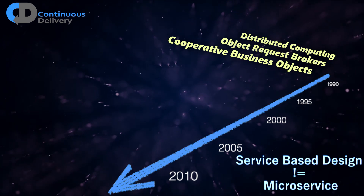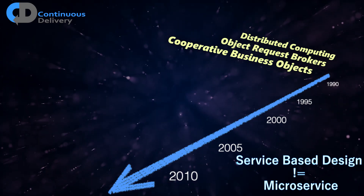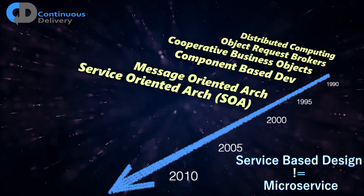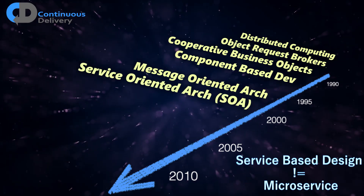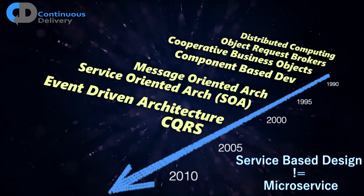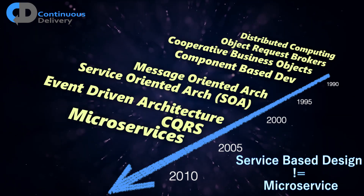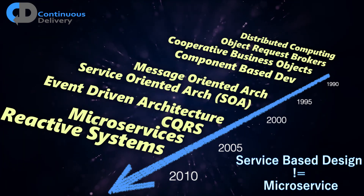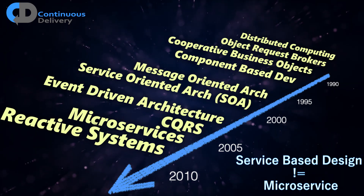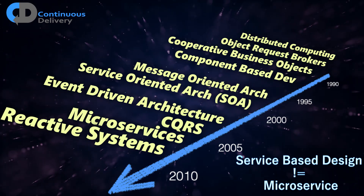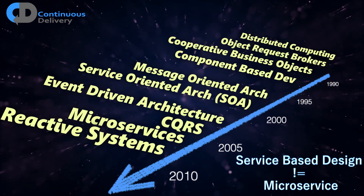These were little bundles of domain logic that communicated through what we called a semantic data service — a bit like XML but predating XML. I then moved on to bigger commercial systems, working on component-based systems and message-oriented architectures. Service-oriented architecture came in at the beginnings of this century and became more popular. Then I moved into building high-performance systems based on event-driven architectures, sometimes using patterns like CQRS, microservices, and ending up with something called reactive systems. All of these are service-oriented systems.